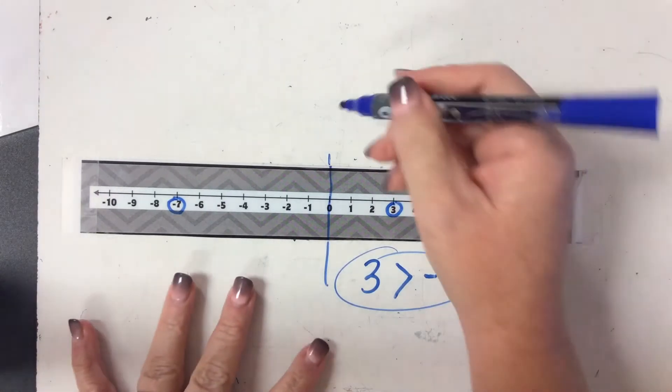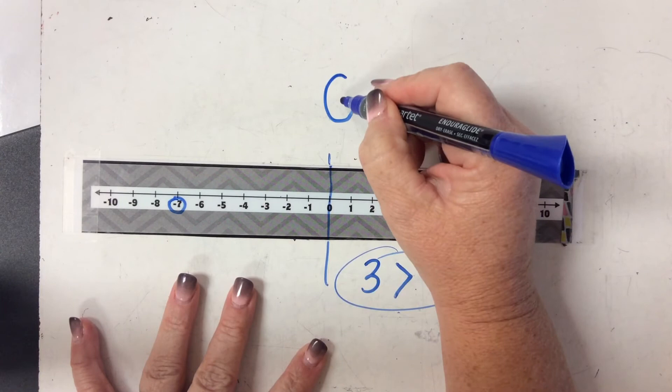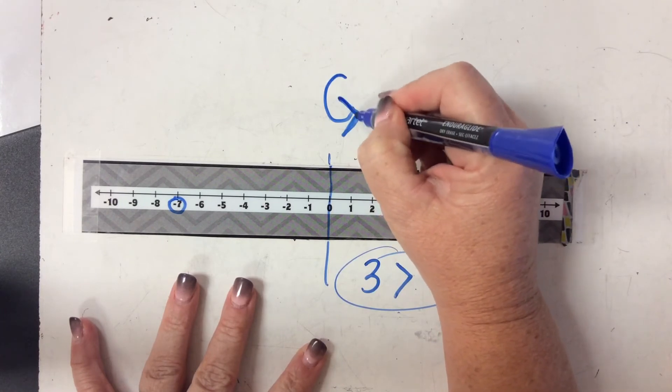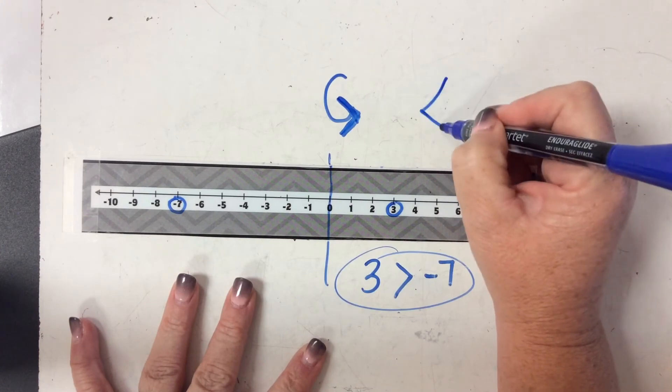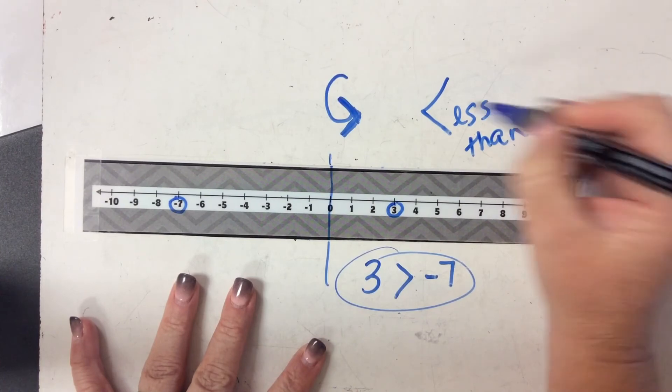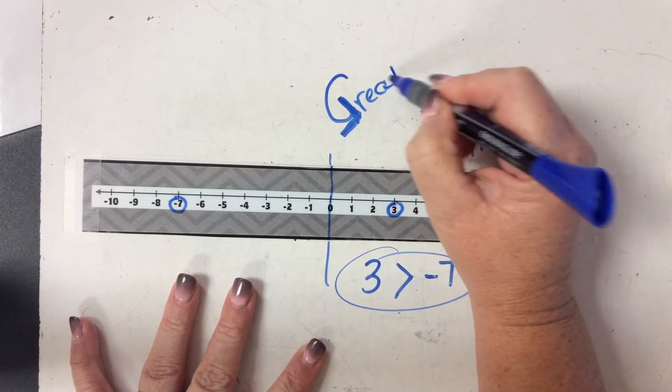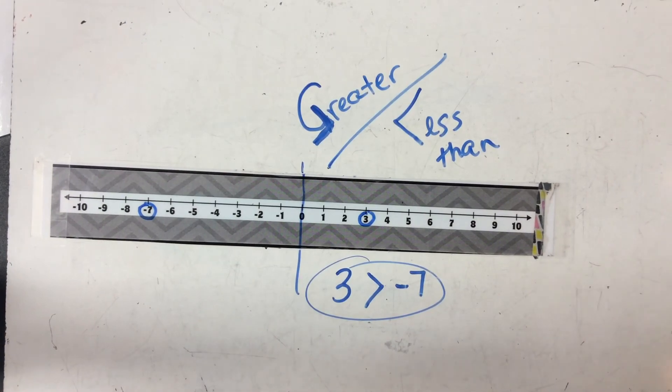So remember, the greater than symbol, like you're gonna make a G for greater than, but put that symbol in there. That means greater than. And then my less than, use that less than symbol to write less than. Okay, that may help you remember which one's which, using those symbols.